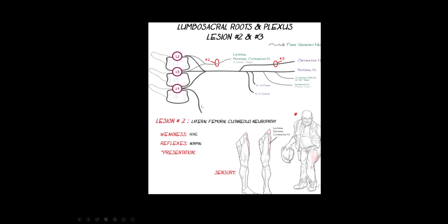Lateral femoral cutaneous neuropathy, or meralgia paresthetica, is not really a radiculopathy or plexopathy but is very important to recognize. The nerve is damaged in the groin area, usually in overweight individuals who wear tight belts. Patients complain of numbness, tingling, and pain in the lateral thigh. Since this is a pure sensory nerve, there is no weakness and no reflex changes — unlike a radiculopathy or plexopathy. A classic board story is a police officer or utility worker with a big tight belt presenting with this sensory loss.